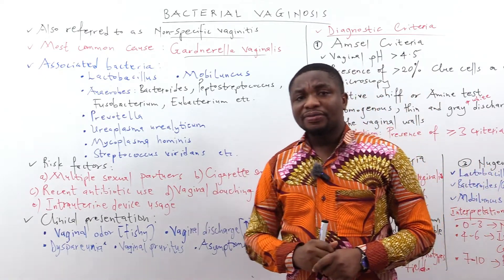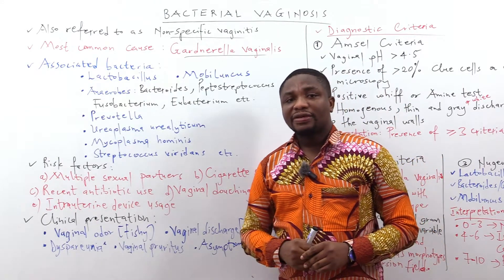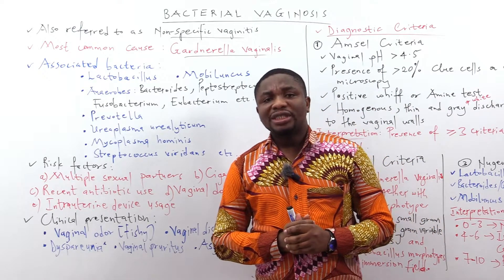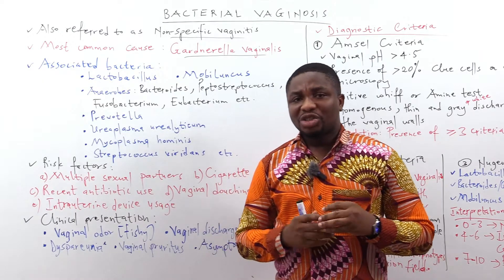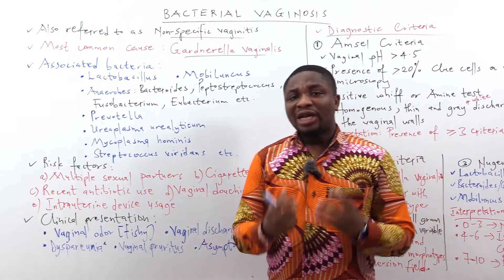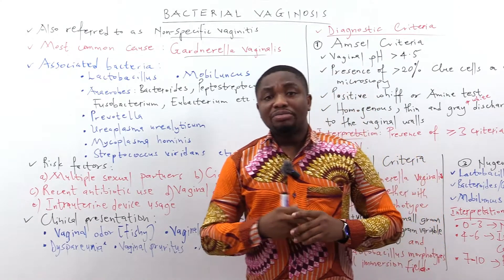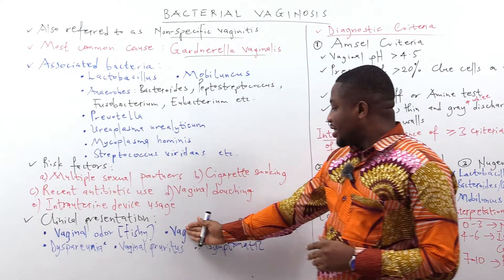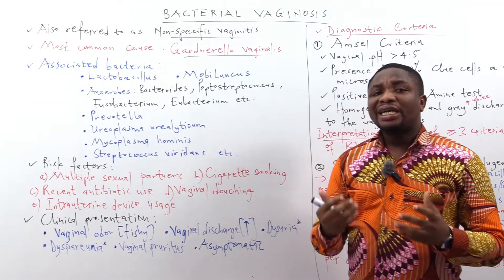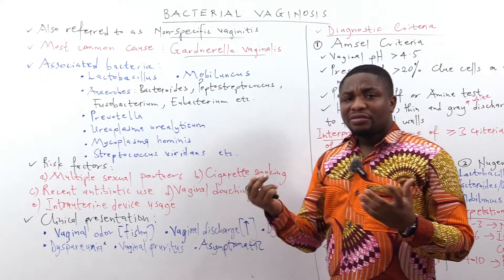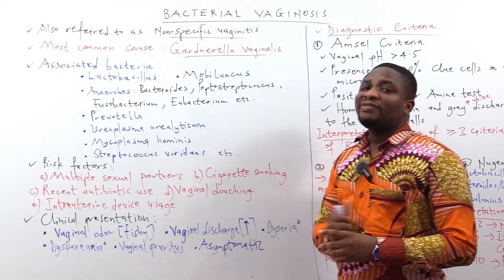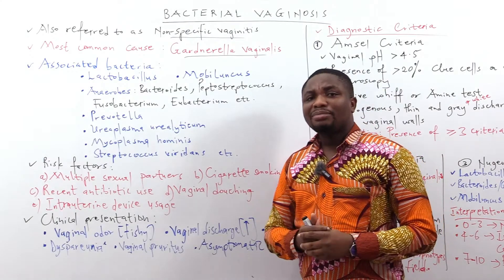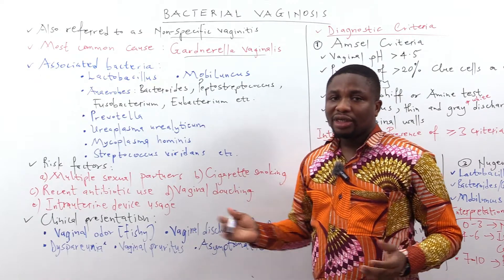Let's talk about the clinical presentation. The most common presentation is vaginal odor, which is fishy in nature and most prevalent during sexual intercourse. During intercourse, the alkaline semen liberates volatile amines from the vaginal discharge, producing the fishy odor. The next presentation is vaginal discharge — mildly to moderately increased compared to normal physiological discharge — and it is malodorous, carrying that fishy smell.